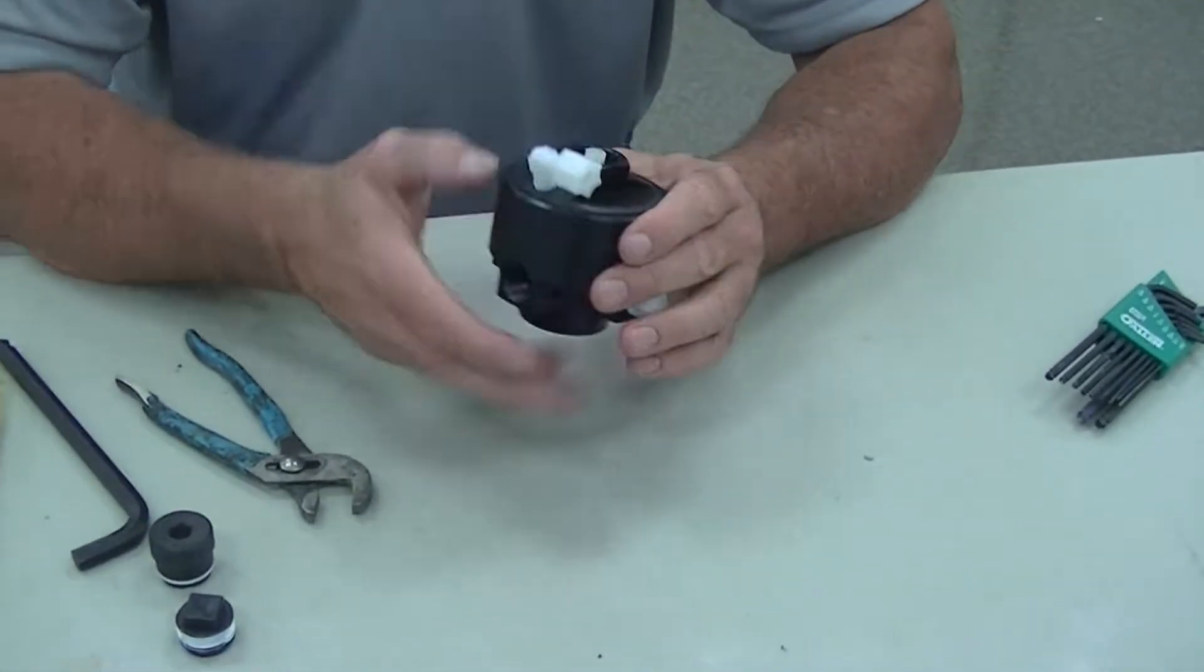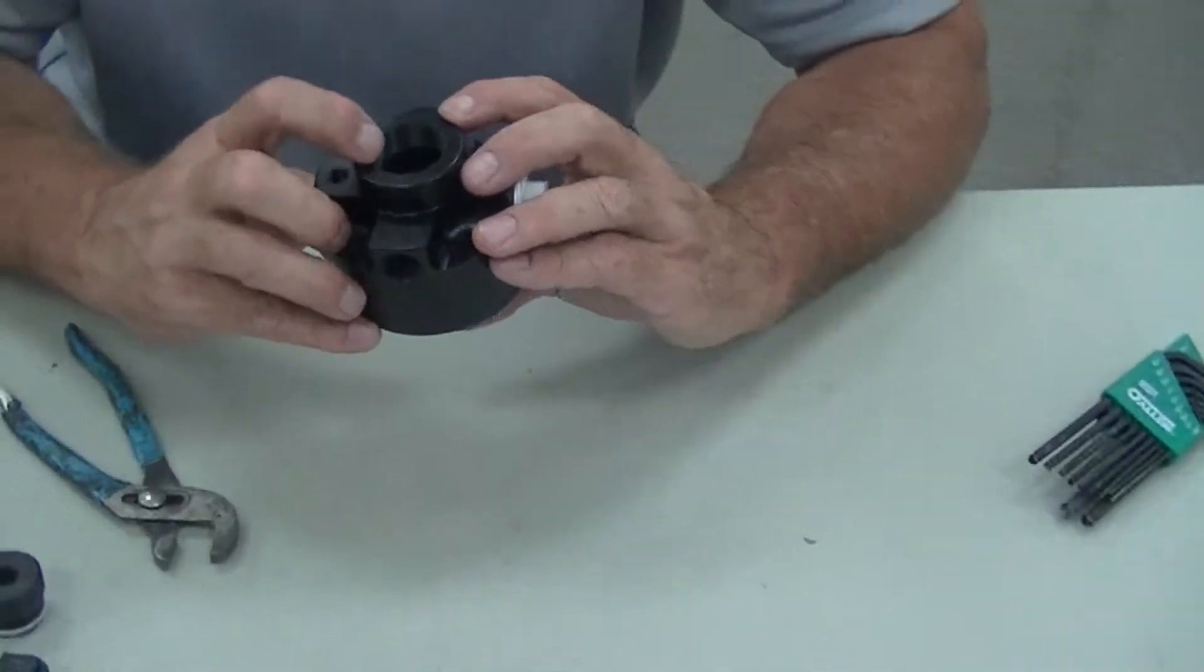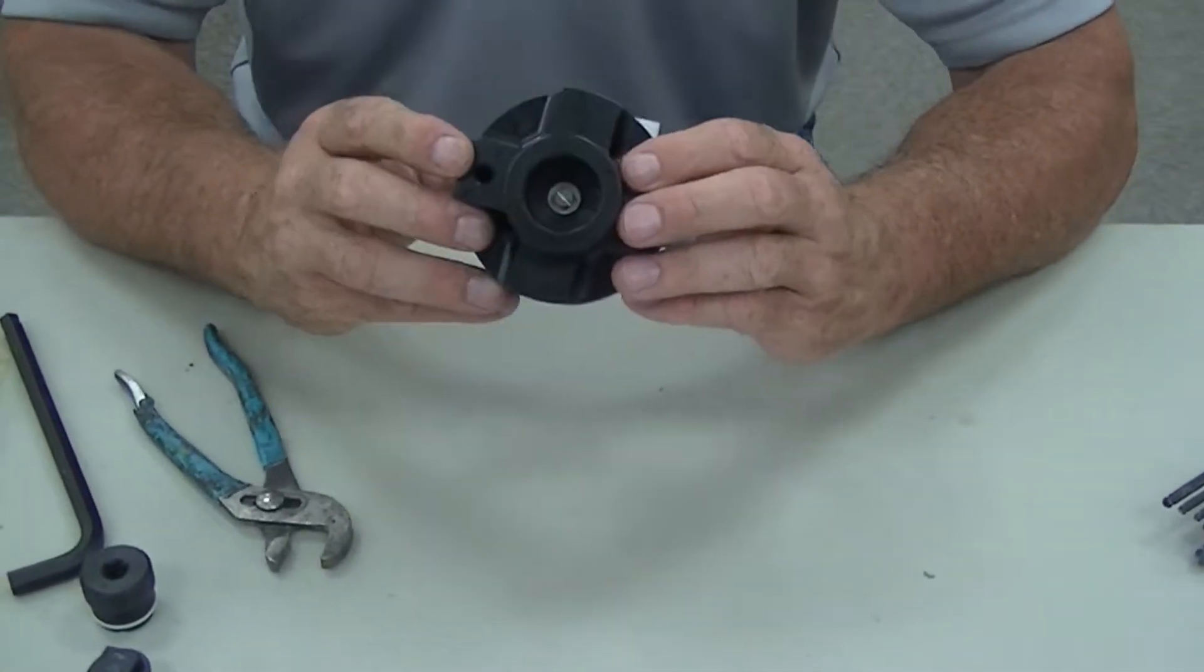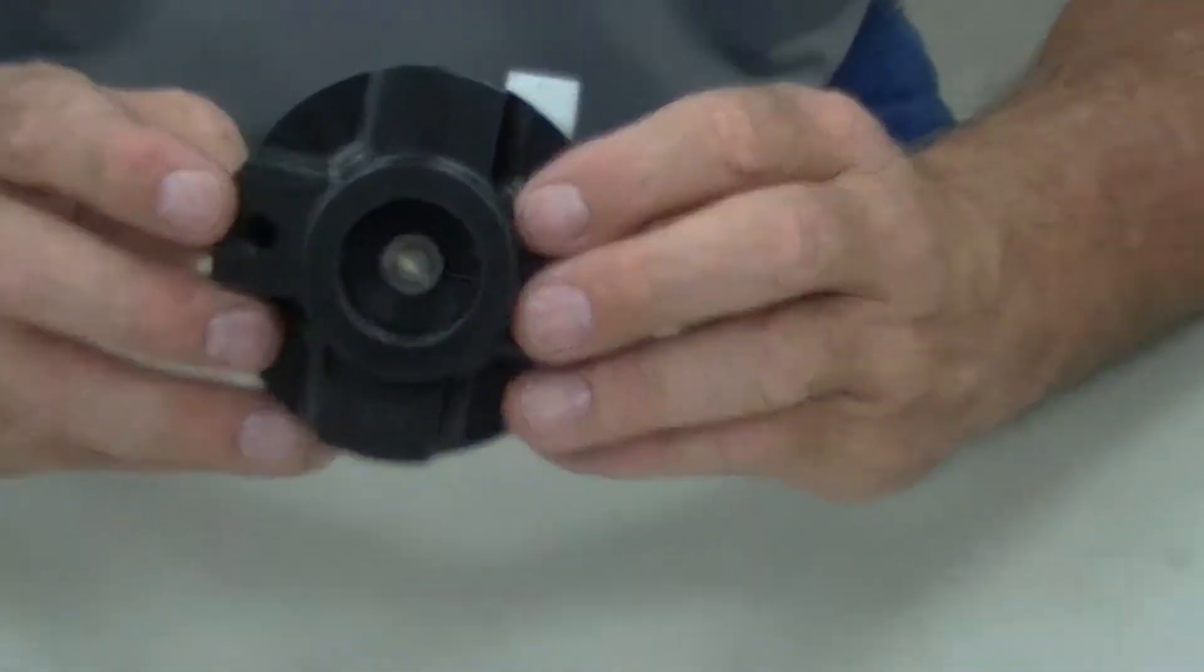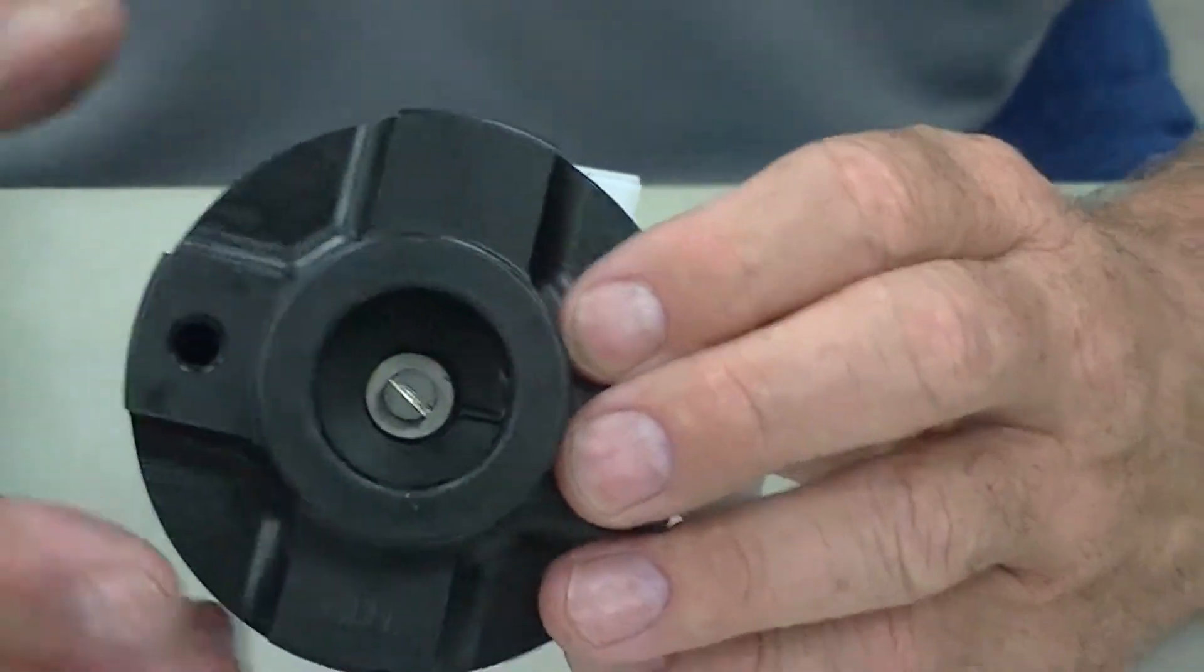It talks about, in the manual, about putting air to it. And the reason for that is so you lift the stem off the seat. What they don't want you doing is turning that and spinning it on the carbide seat and scratching it.